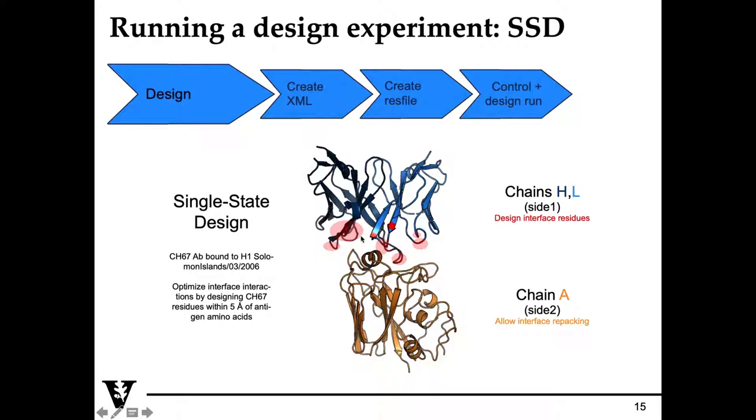We're only concerned about designing the interface residues of the antibody. The reason is that we're trying to maximize the binding interface energy of this antibody to the antigen. In other words, we're trying to maximize the binding of the fab to the antigen.